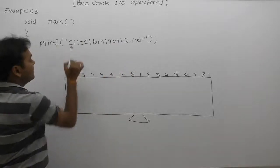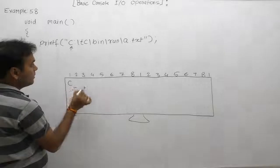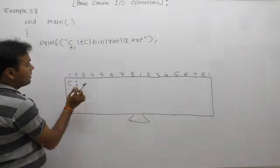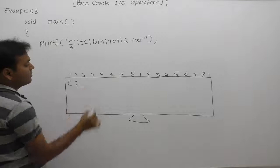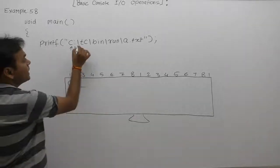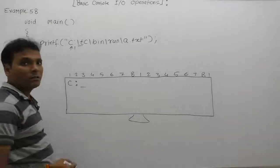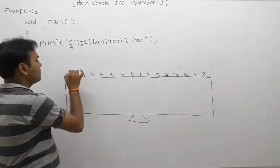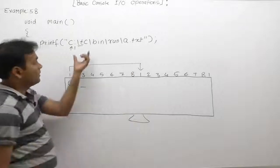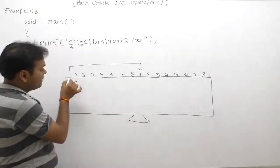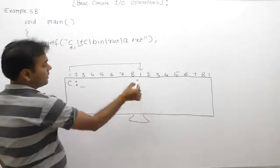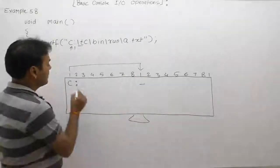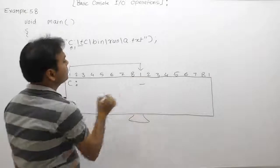First it will print 'c', then the cursor moves to the next position, then it will print colon ':', then again the cursor moves to the next position — so the current position of the cursor is the third position. Next is backslash t. According to backslash t, it is not a printable character; it will move the cursor directly to after the eighth place from the beginning position — counting from the beginning, not from the current place. So the cursor moves to the ninth position.